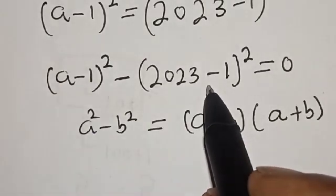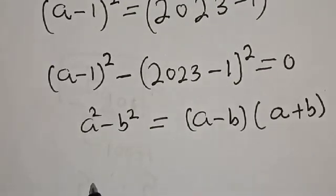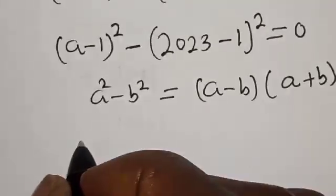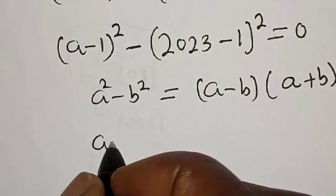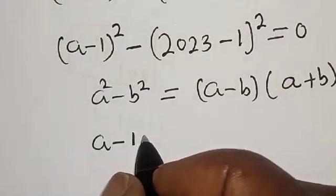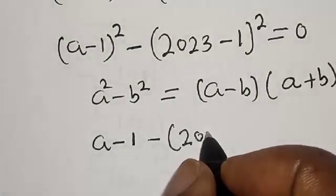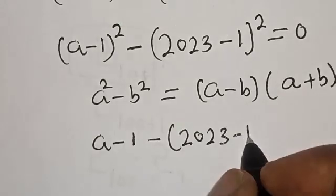Now we have [(a-1) - (2023-1)] multiplied by [(a-1) + (2023-1)].